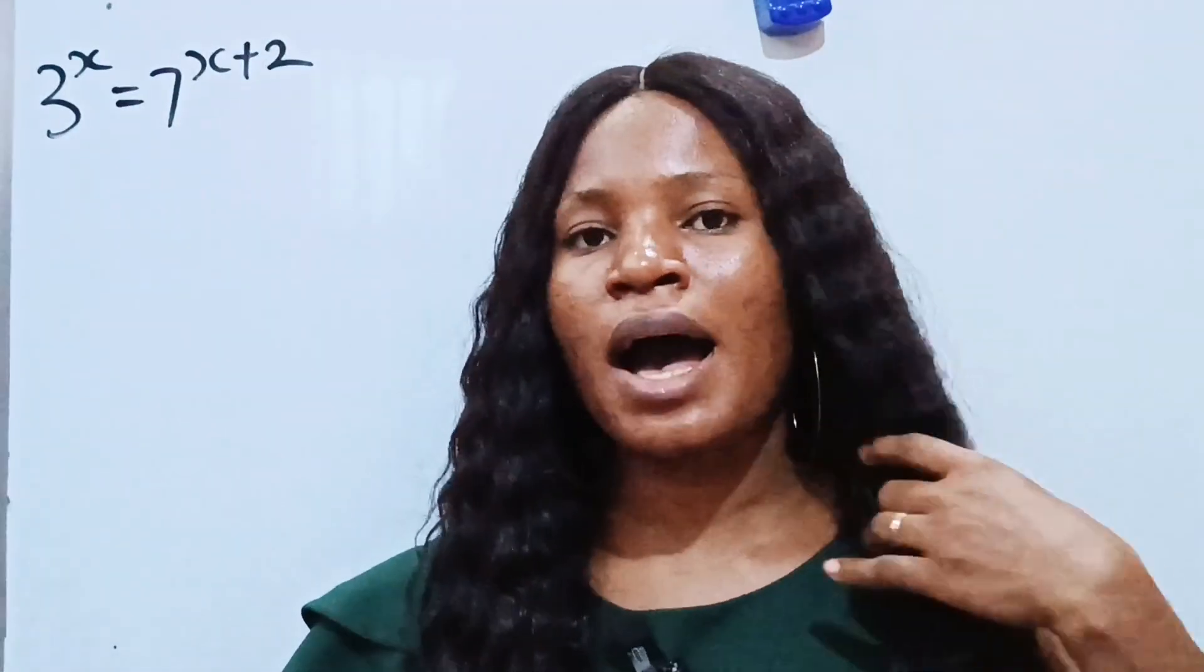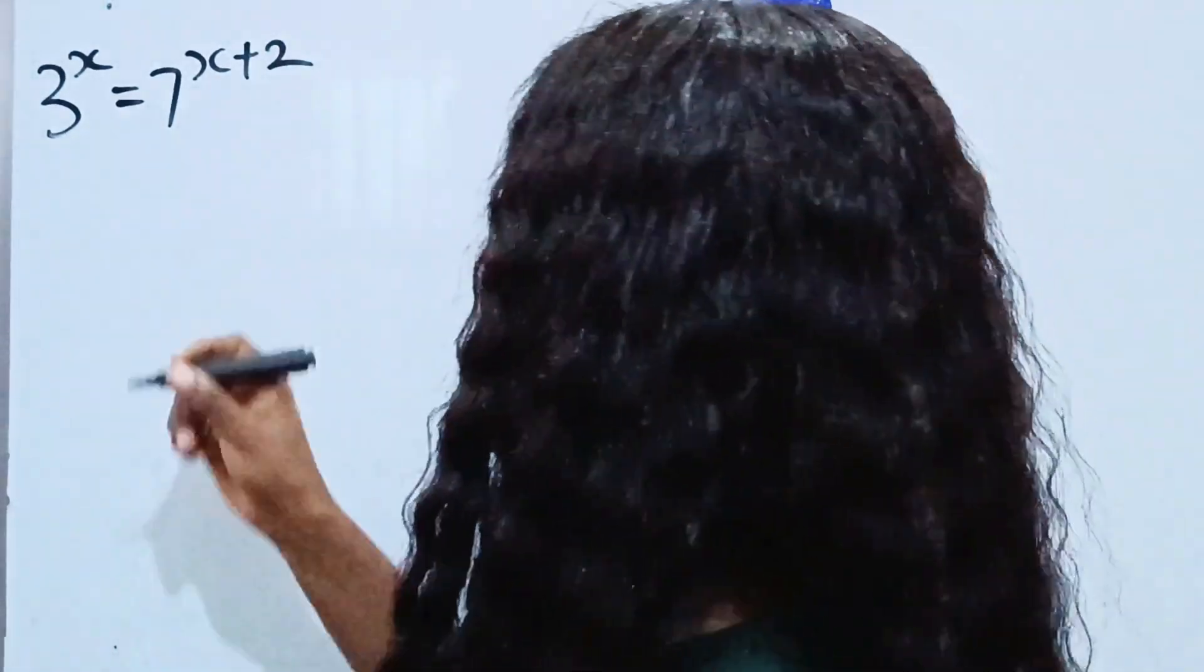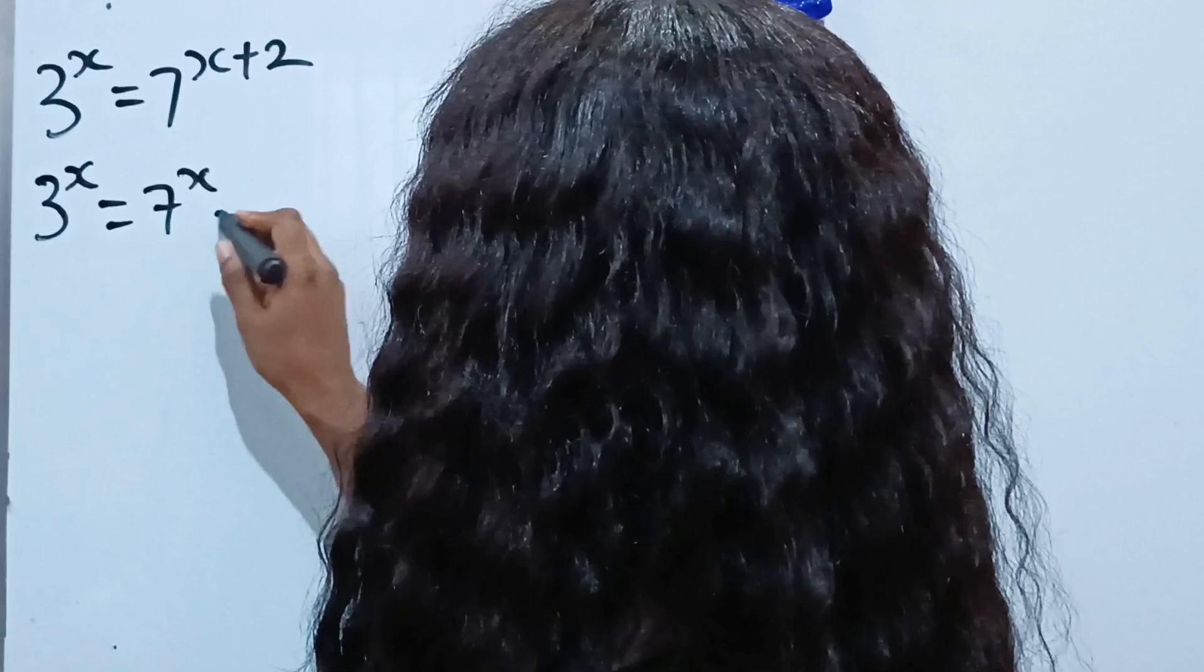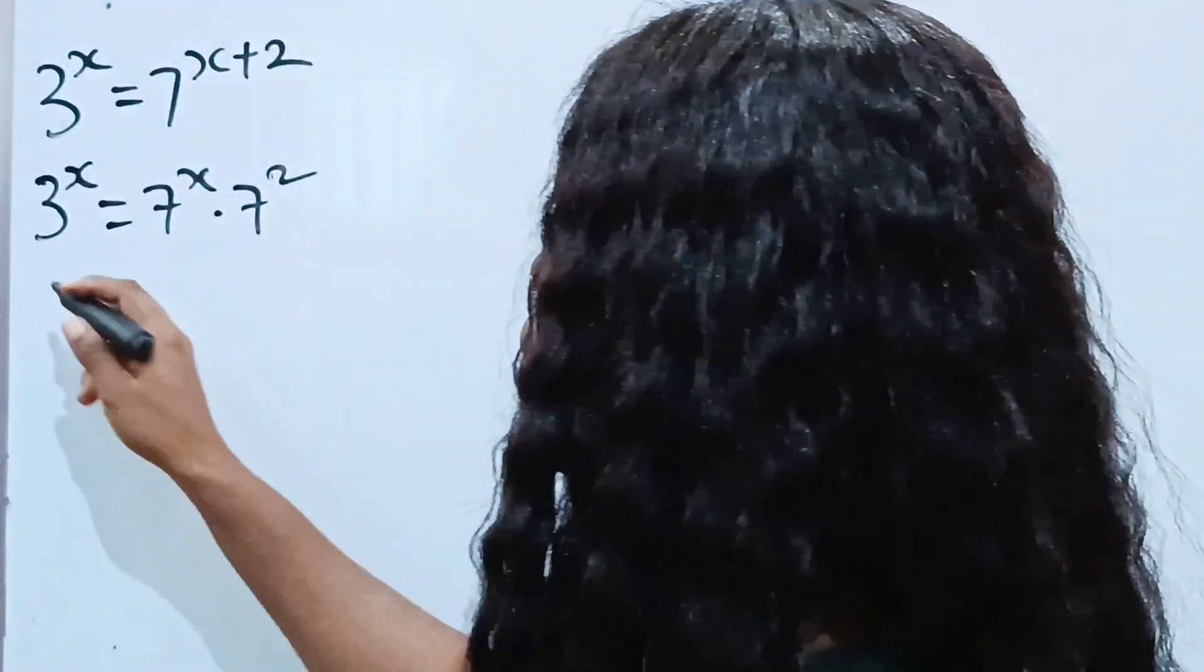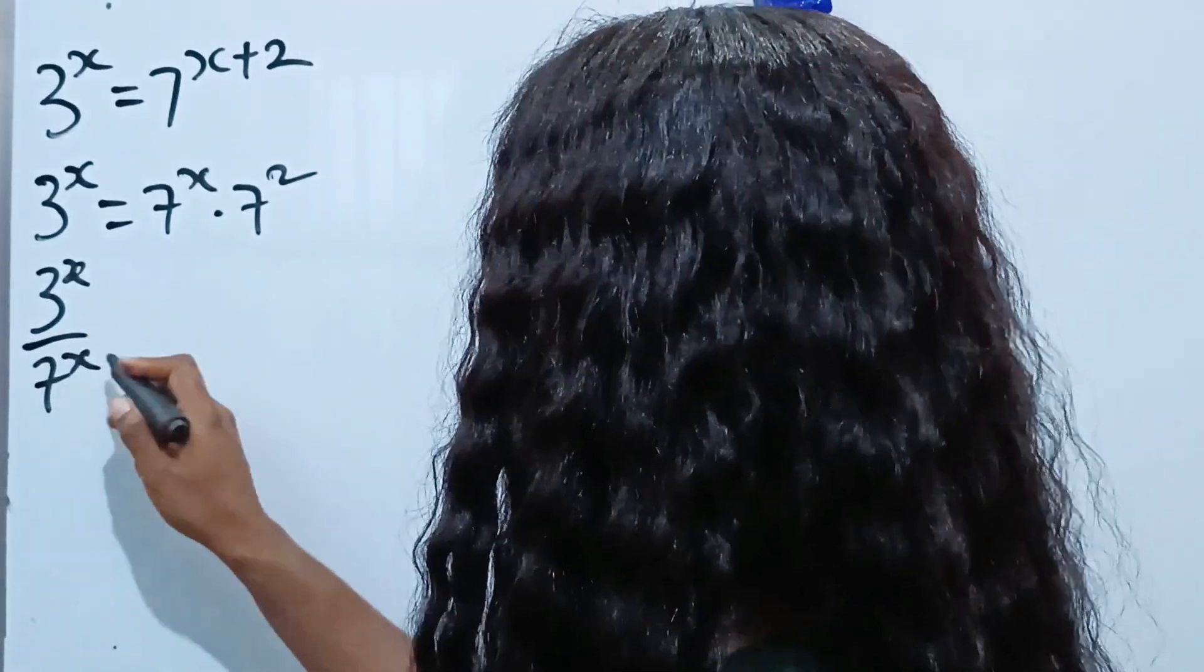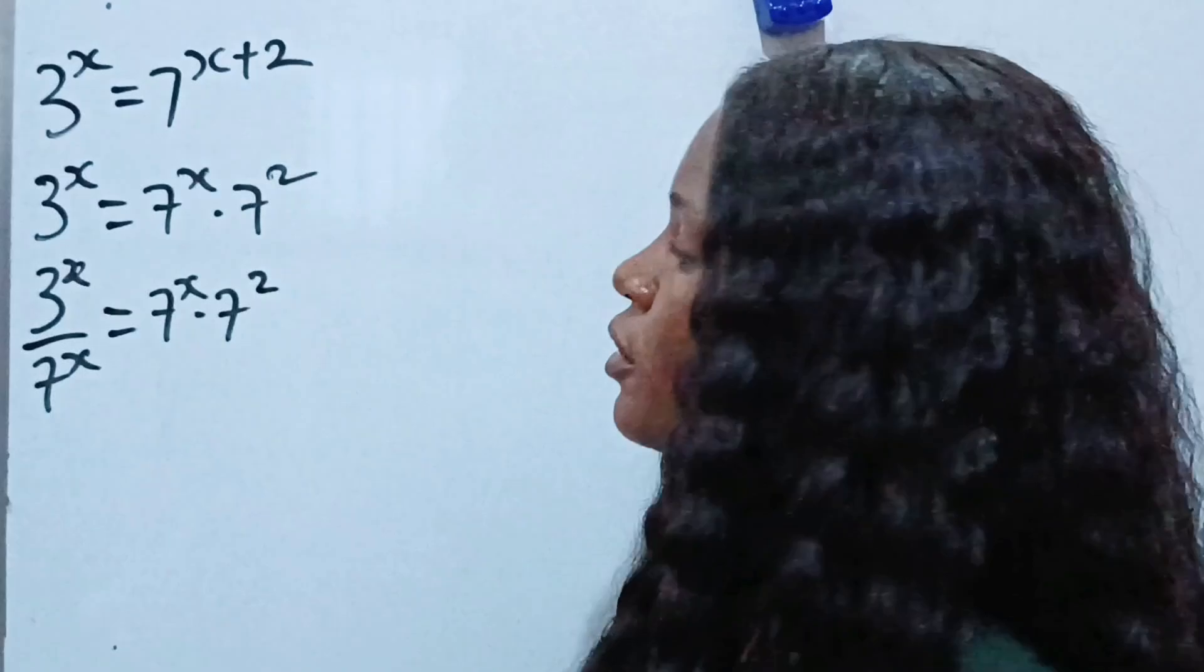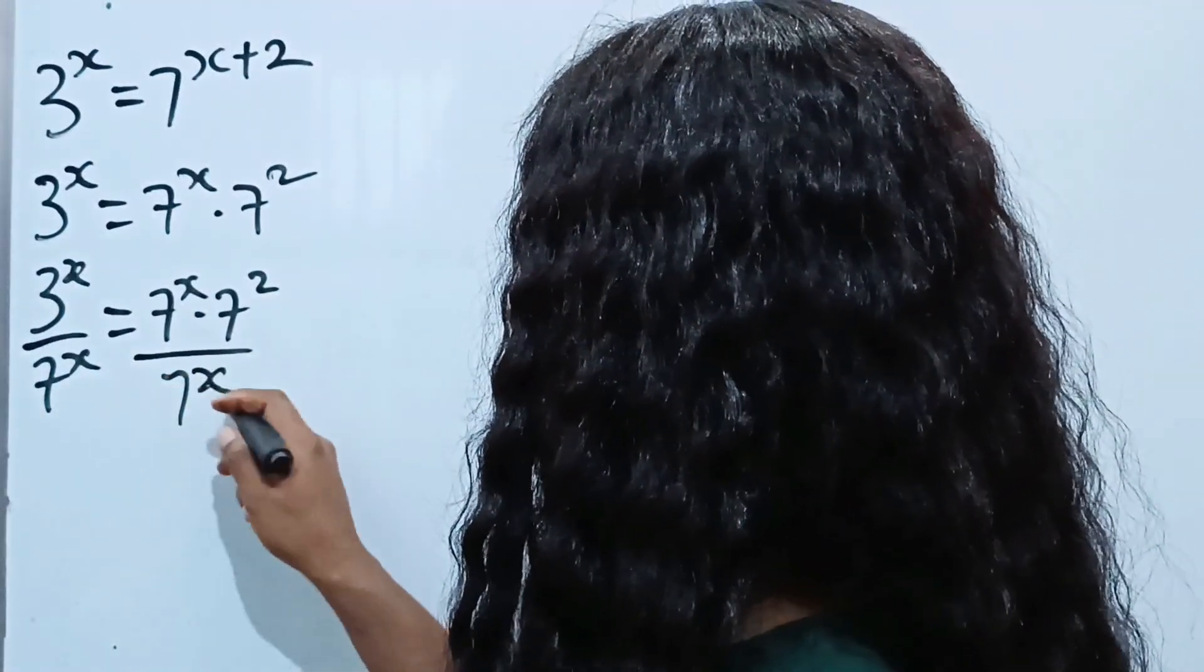For the second method, we are going to apply law of indices or exponents first. So we have 3 to the power of x equals 7 to the power of x multiplied by 7 to the power of 2. So we have 3 to the power of x divided by 7 to the power of x equals 7 to the power of x multiplied by 7 to the power of 2 divided by 7 to the power of x.